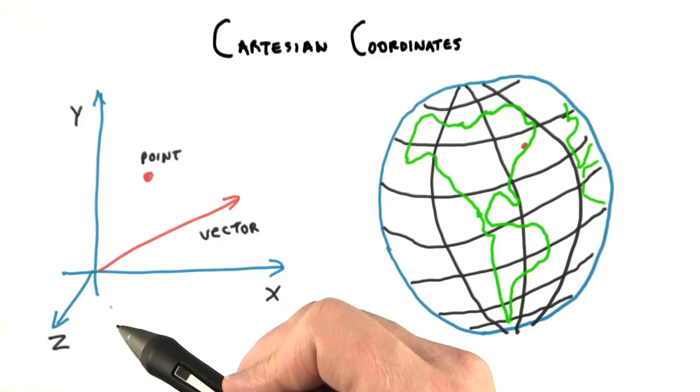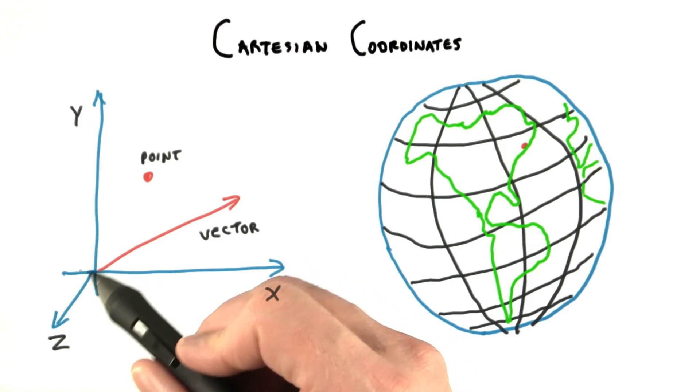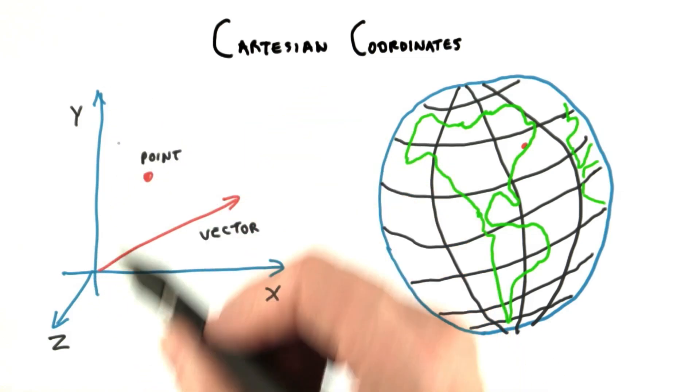In 3D computer graphics, we usually use a Cartesian coordinate system. In this system, we have an origin and three direction vectors called x, y, and z.